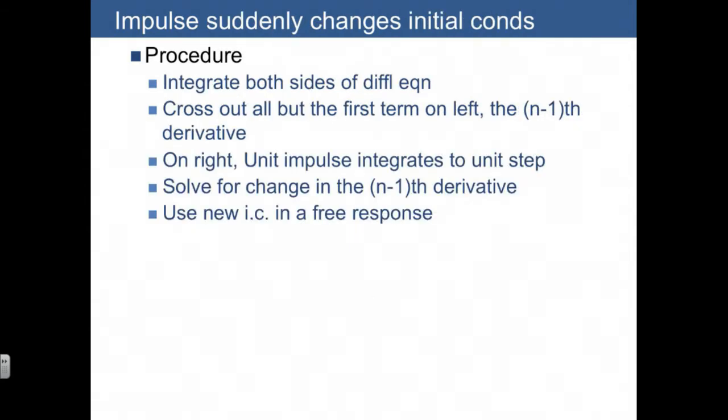Here's the procedure. We integrate both sides of the differential equation. We cross out all but the first term on the left, which is the (n-1)th derivative. On the right, the unit impulse just integrates to the unit step. We solve for the change in the (n-1)th derivative, and then that tells us the new initial conditions that we use for a free response.